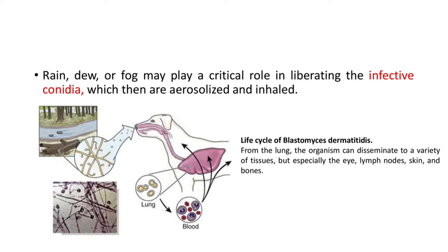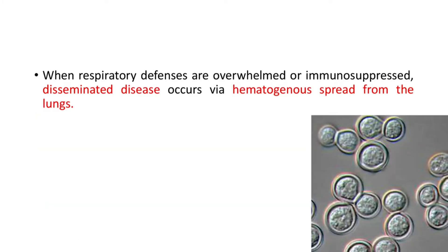Rain, dew, or fog may play a critical role in liberating the infective conidia, which then are aerosolized and inhaled. From the lung, the organism can disseminate to a variety of tissues, but especially the eye, lymph nodes, skin, and bones. When respiratory defenses are overwhelmed or the host is immunosuppressed, disseminated disease occurs via hematogenous spread from the lungs.